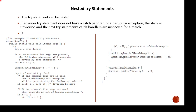If an inner try statement does not have a catch handler for a particular exception, the stack is unwound and the next try statement's catch handlers are inspected. If the first catch doesn't match, it moves to the next, then the third. If none match, the Java runtime system comes into picture and handles the exception.